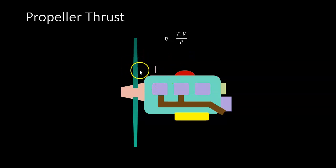The prop then produces some thrust, so the work done is the thrust times the velocity of the aircraft. If we divide the work out by the work in, we get the efficiency of the propeller.